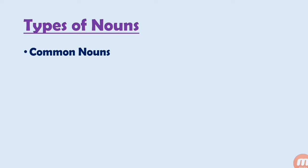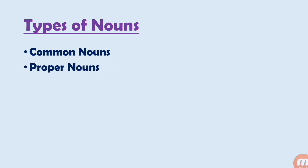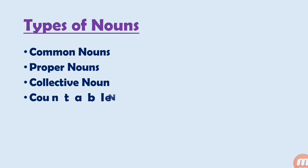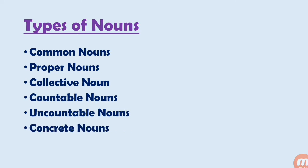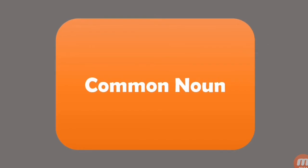Let's see the types of noun. The types are: common nouns, proper nouns, collective nouns, countable nouns, uncountable nouns, concrete nouns, and abstract nouns. Let's go with the first one — common noun.